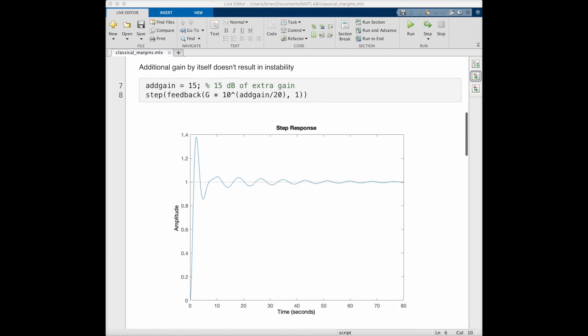And to show this, let's assume that the gain in our model was way off, and the real system has an open loop gain that is 15 decibels higher. We can get the closed loop system with the feedback command, and plot the step response for the closed loop system. And you can see that even with this large gain error, it's still a stable system.